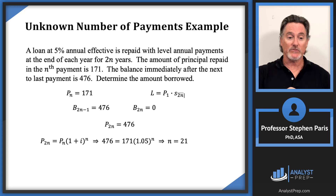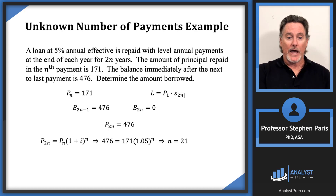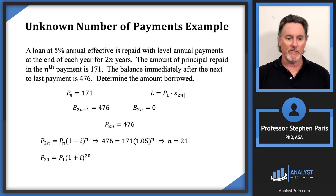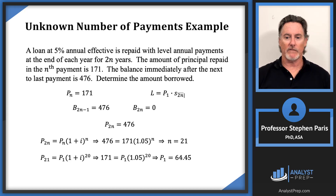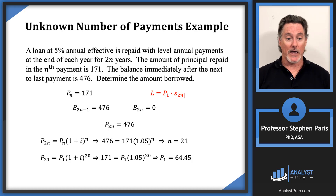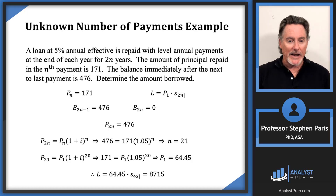Now with n = 21, I know P_{21} = 171. To find L I need P_1. There are 20 periods between time 1 and time 21, so P_{21} = P_1 × (1.05)^{20}. Solving gives P_1 = 64.45. Then L = P_1 × s-angle-2n = 64.45 × s-angle-42 at 5%, which gives L = 87.15.